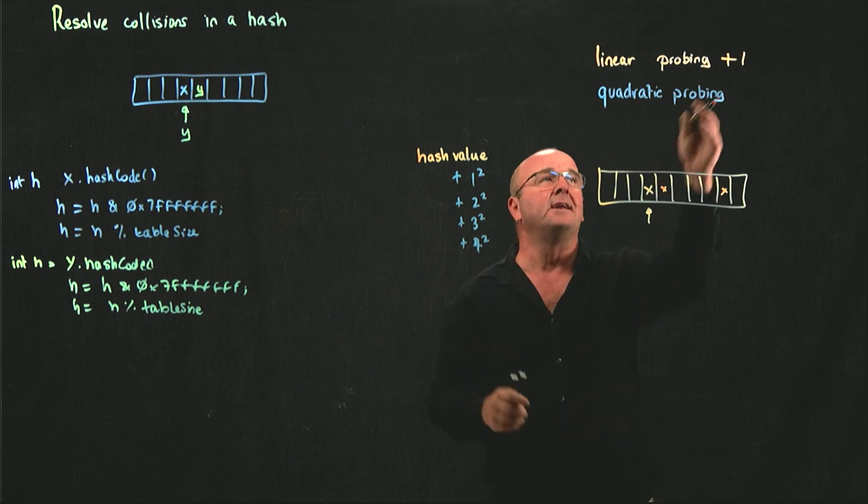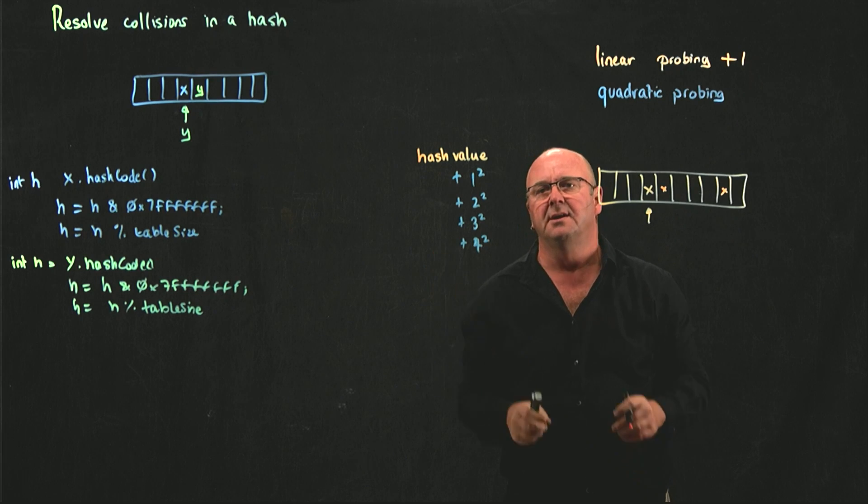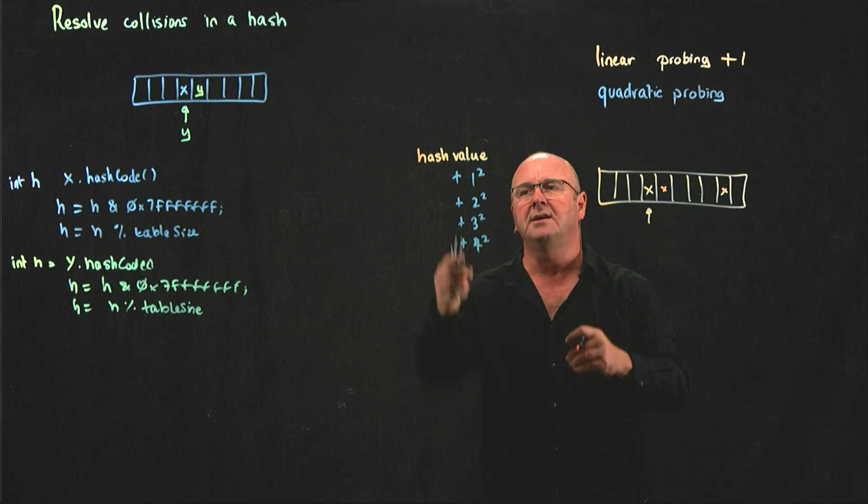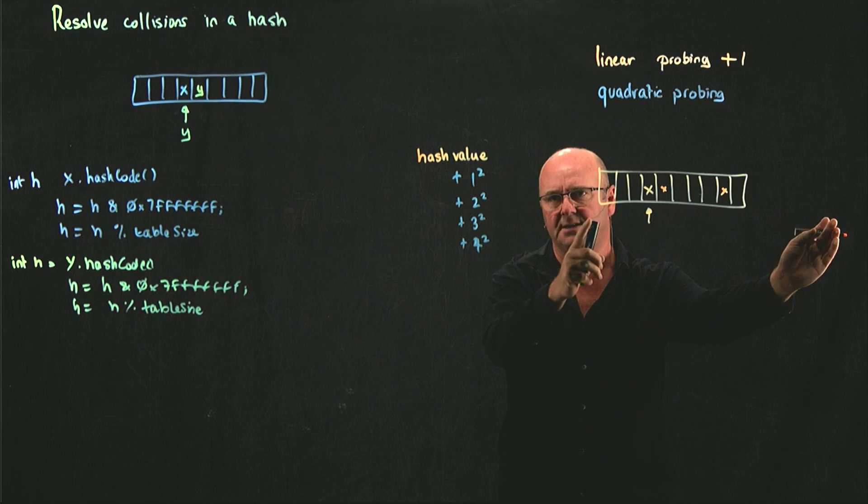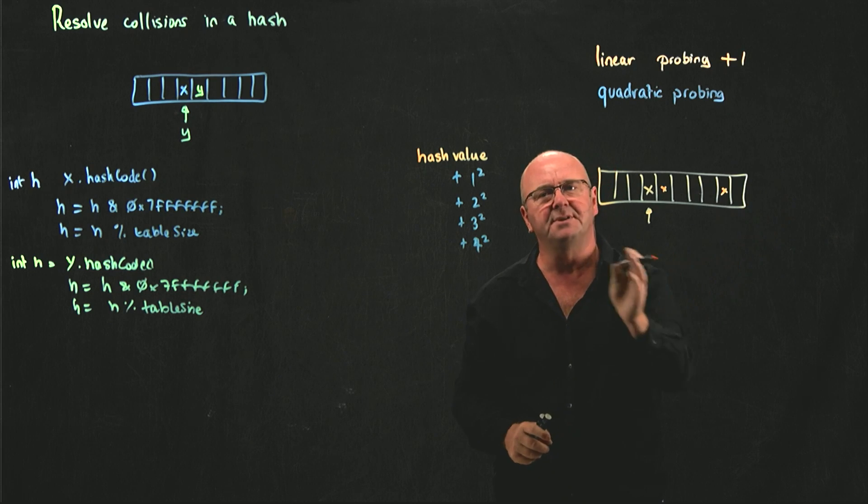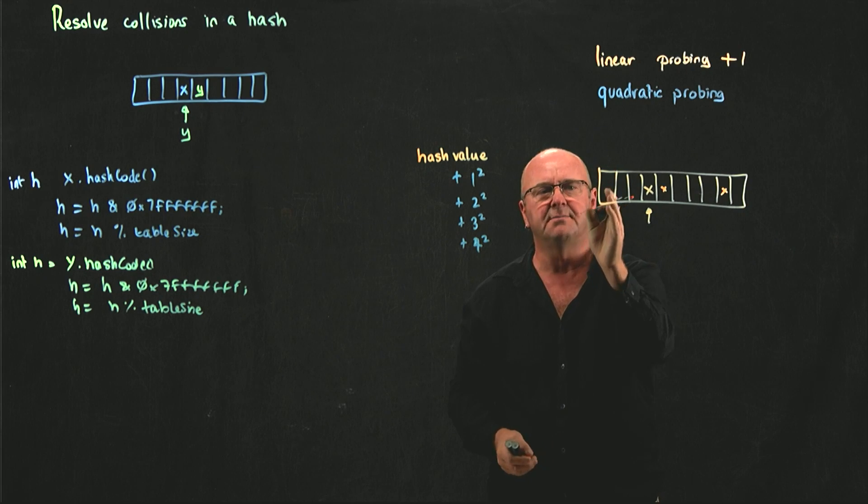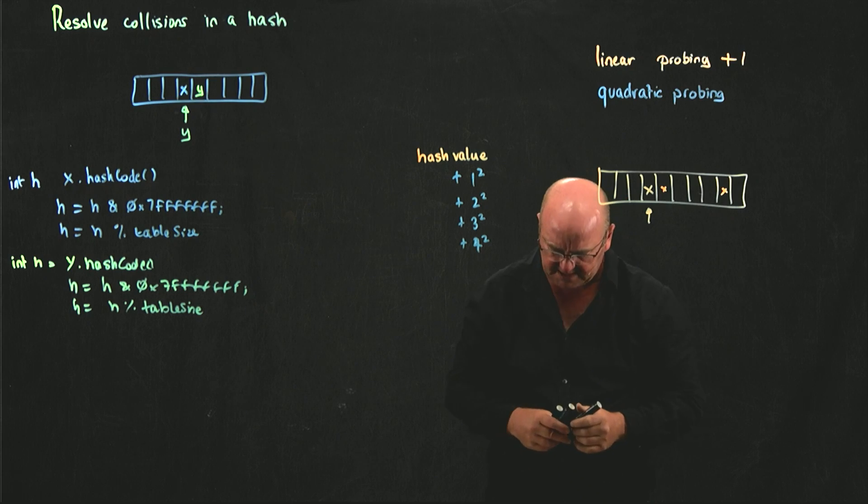Of course, in both linear probing and quadratic probing, we need to be cognizant that as we're increasing the result of our hash value, it may extend beyond the end of our table size. And so, if that happens, we need to mod back over and make sure that we're within the range of our table size.